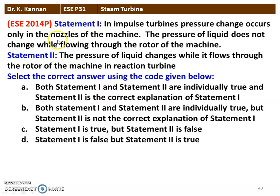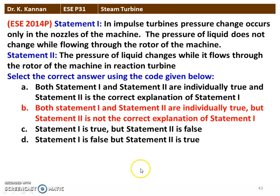The next question, again from the 2014 question paper. Statement 1: in impulse turbine, pressure change occurs only in the nozzle; the pressure of the fluid does not change while flowing through the rotor blade — that statement is correct. Statement 2: the pressure of the fluid changes while it flows through the rotor in a reaction turbine — this is also correct; in the reaction turbine, pressure drop takes place across the rotor. So statements 1 and 2 are individually true, but statement 2 is not the correct explanation of statement 1. Option B is the correct answer.